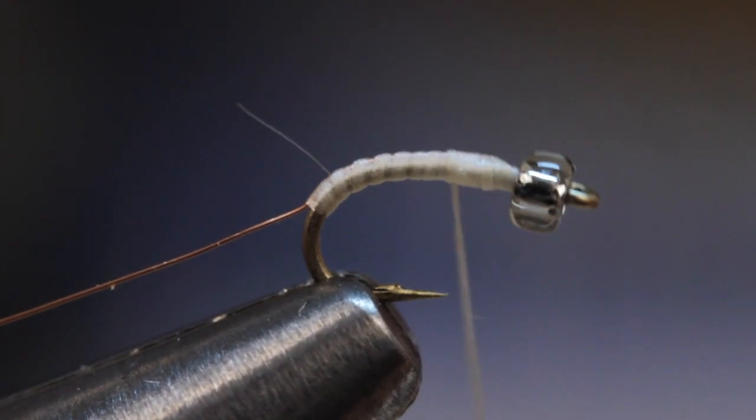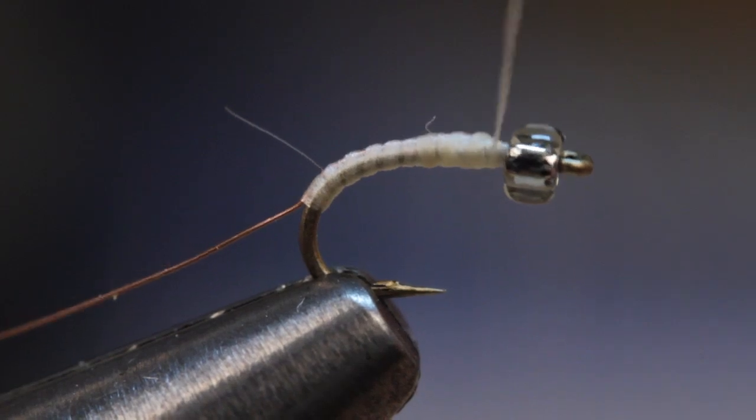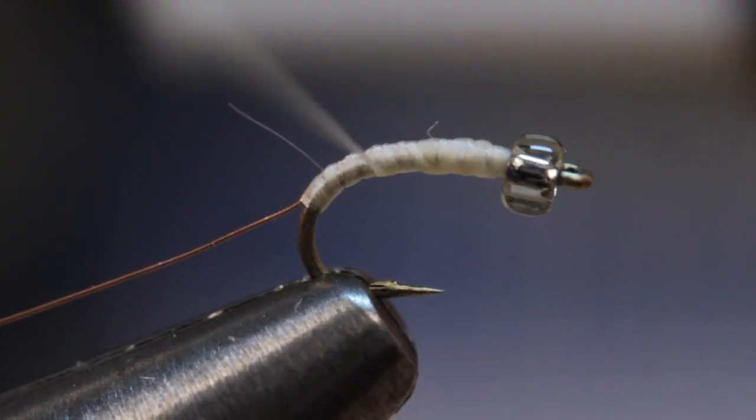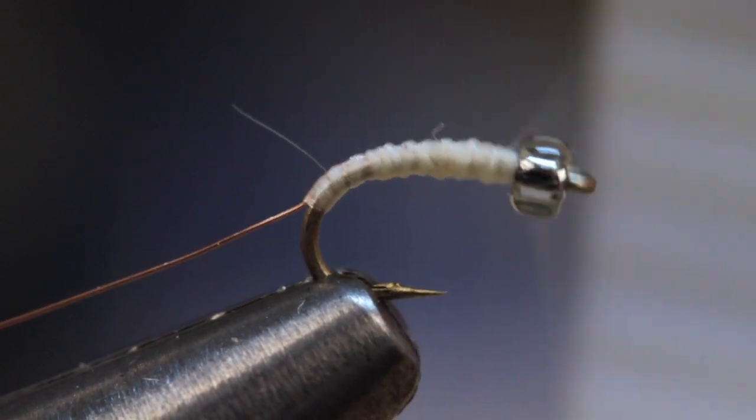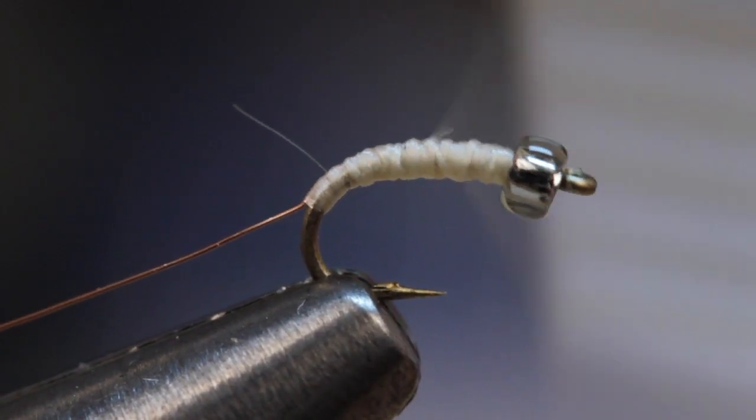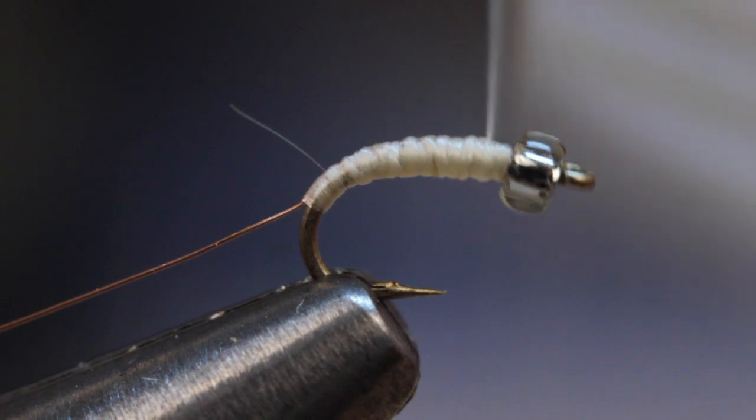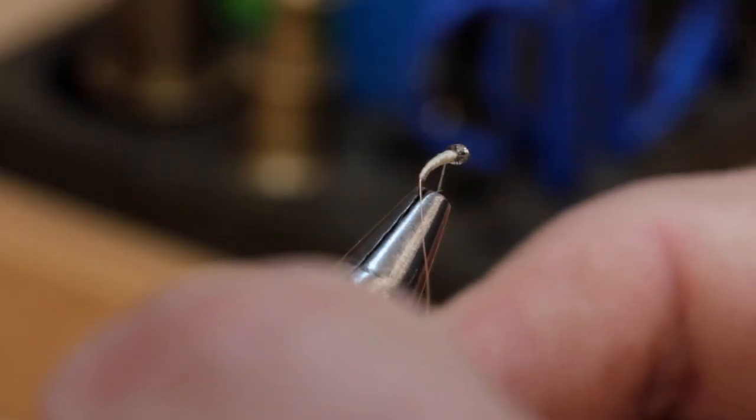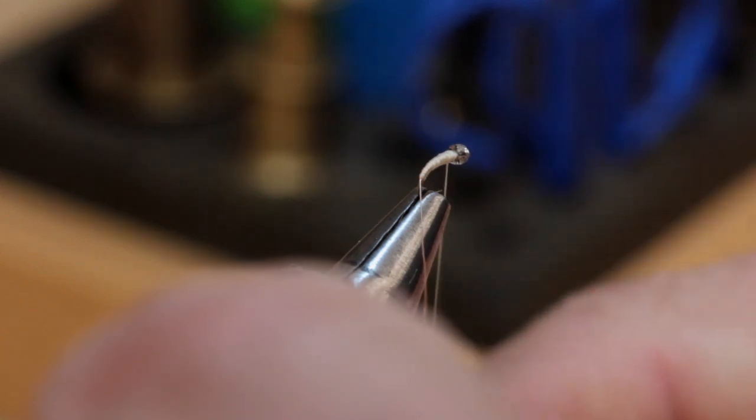I like to build up a tapered body by first taking wraps down the hook shank about a quarter of the way and then back up, then going a little further and back up. When you have a nice little taper going, get the thread back to behind the bead and give your bobbin a counterclockwise spin to untwist and flatten the thread.